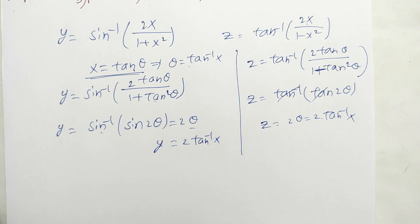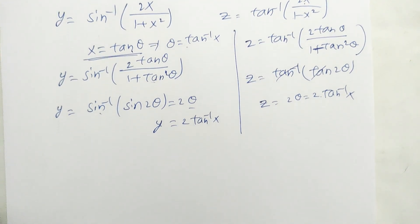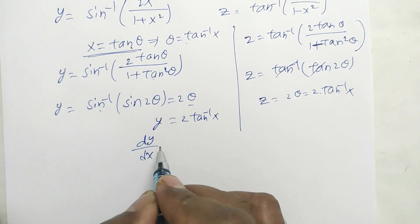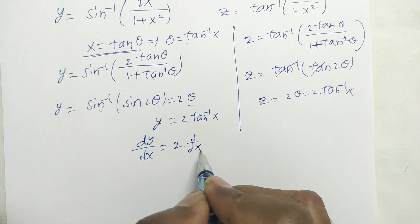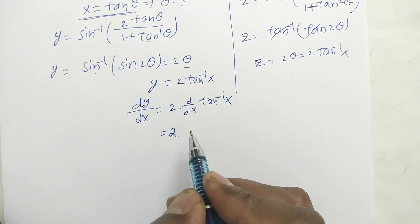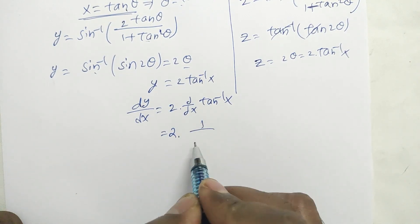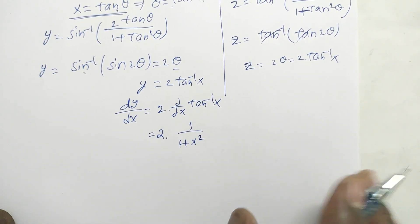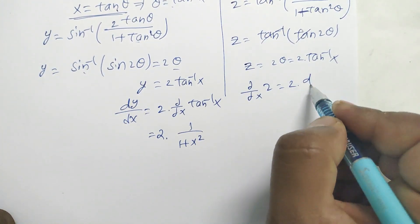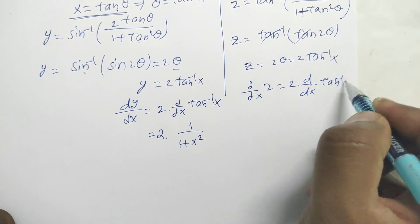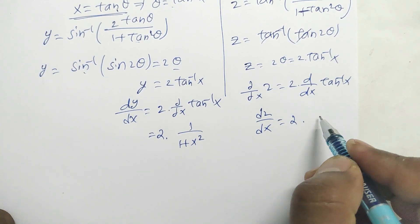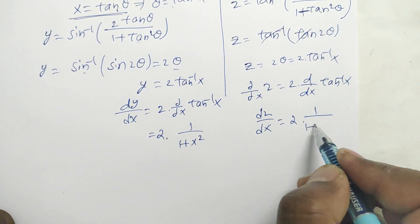We can see that Y = Z = 2·tan⁻¹(x). Now differentiating with respect to x: dy/dx = 2·d/dx(tan⁻¹x) = 2·(1/(1+x²)). Similarly, dz/dx = 2·(1/(1+x²)).